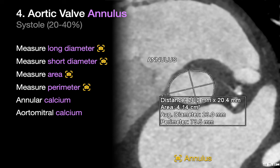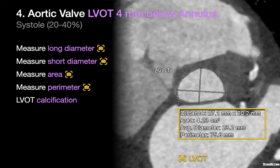Assess and report the amount of aortic annular and aortomitral calcification you see — both are associated with a higher risk of aortic annular rupture during TAVR, especially with balloon expandable TAVRs. You'll then go 4 millimeters below the aortic annulus and measure the left ventricular outflow tract. Calcified and non-tubular LVOTs are associated with poorer outcomes, including paravalvular leak and LVOT rupture risk. Measure and report the LVOT's long diameter, short diameter, area, and perimeter, and do an image capture of the LVOT.